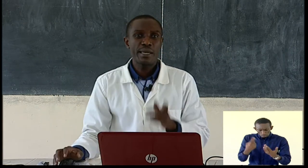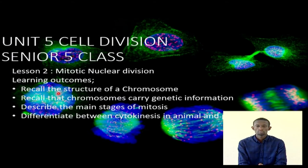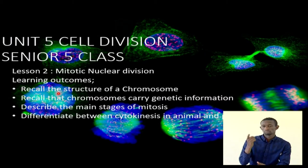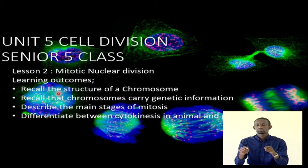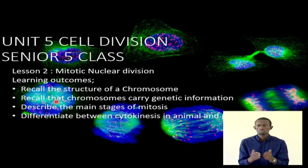A few things we are looking at today. One, we need to remember that cells contain chromosomes — we looked at this previously: the structure of the chromosome, the components, the design, what it carries and to where. Objective number two: this genetic information has to be handed over. And describing the main stages of mitosis.